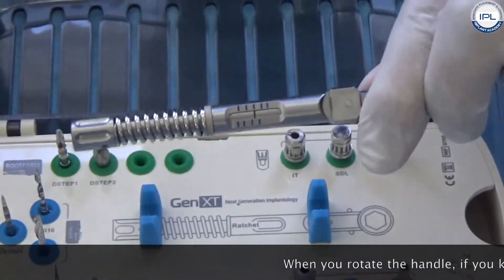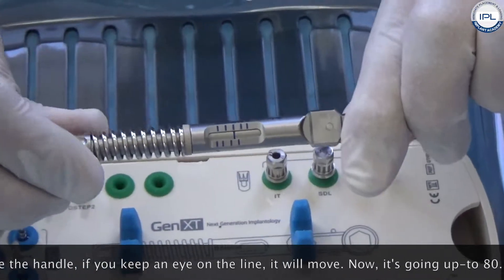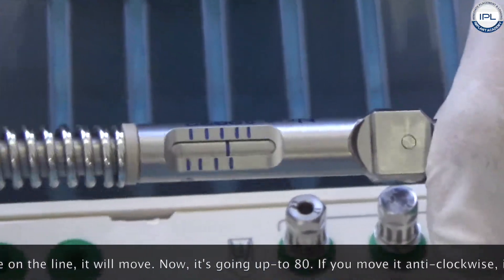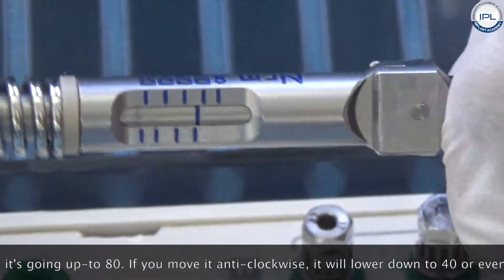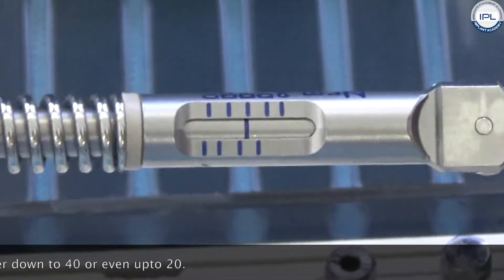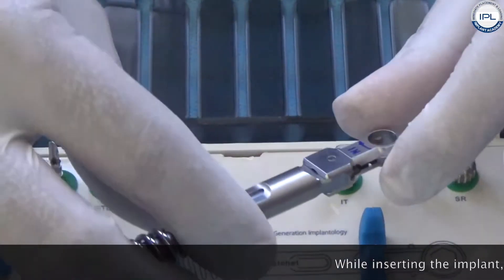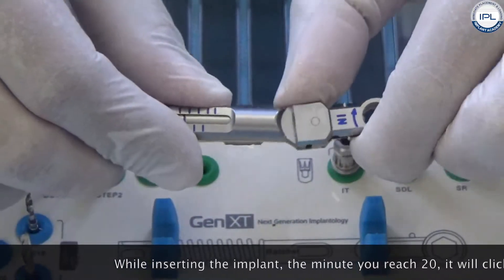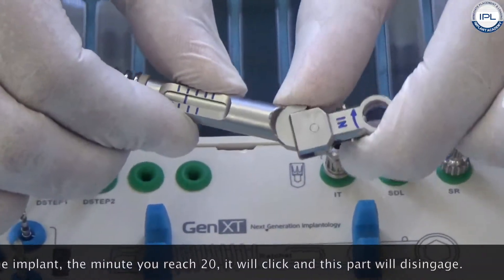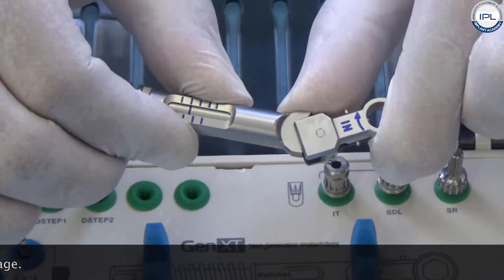When you rotate this, if you keep an eye on this line, it will move. You can see now it's going up to 80. If I move it the anti-clockwise way it will go lower down up to 40 and even up to 20. While inserting the implant, the minute you reach 20 you will have this clicking here. This part will disengage. So you know that you have reached 20.